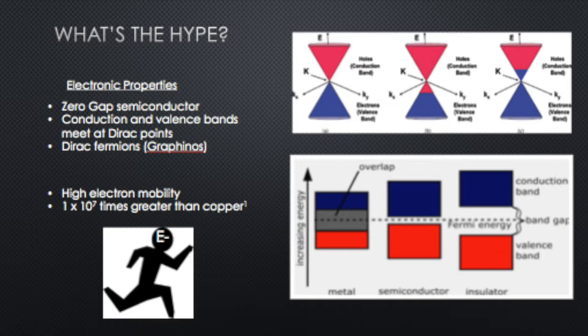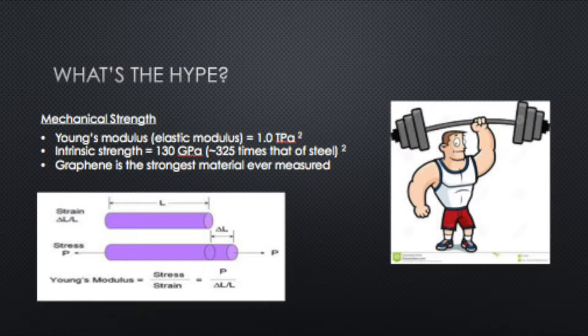Another remarkable property of graphene is its strength. It has a high elastic modulus and intrinsic strength measured at 1 terapascal and 130 gigapascals respectively. These values mean that it's roughly 325 times the mechanical strength of steel. Graphene is the strongest material ever measured in a laboratory setting — theoretically, things made out of graphene will be incredibly strong and will stretch a great deal before breaking.